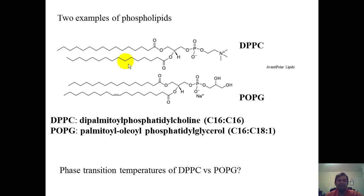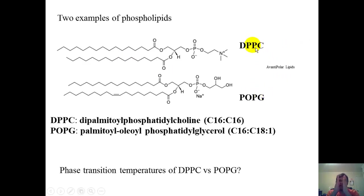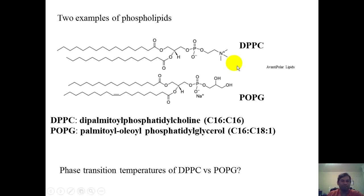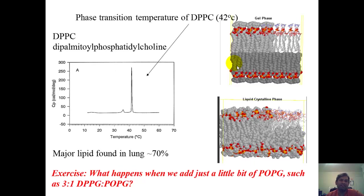That is why nature has introduced a little bit of this monounsaturated phospholipid POPG. About 70% of lung surfactant is DPPC and about 10% is POPG. The double bond in POPG disrupts packing and lowers the phase transition temperature of DPPC, so inside the air-water interface of the lung, gas exchange goes through a liquid phase, not a gel phase. The POPG helps lower that phase transition temperature significantly, which is very important in respiratory dynamics.